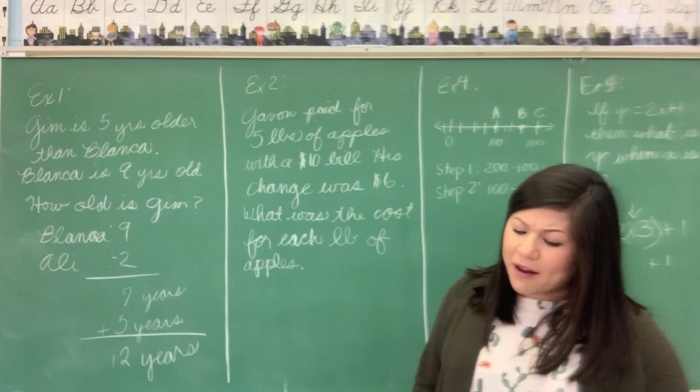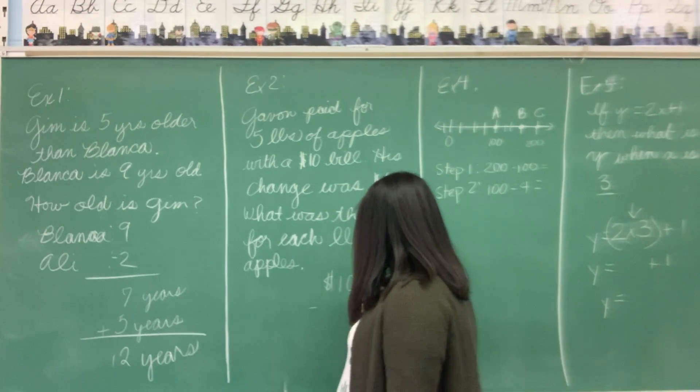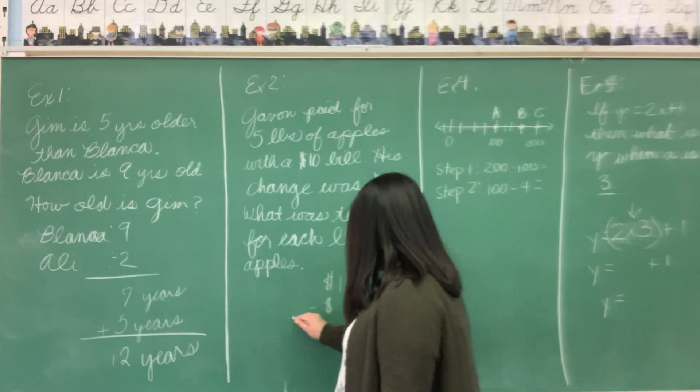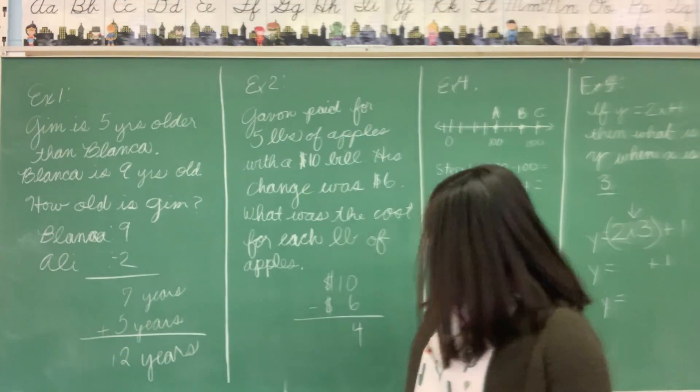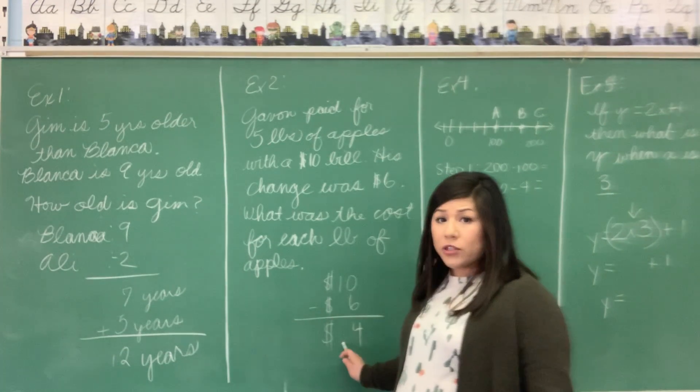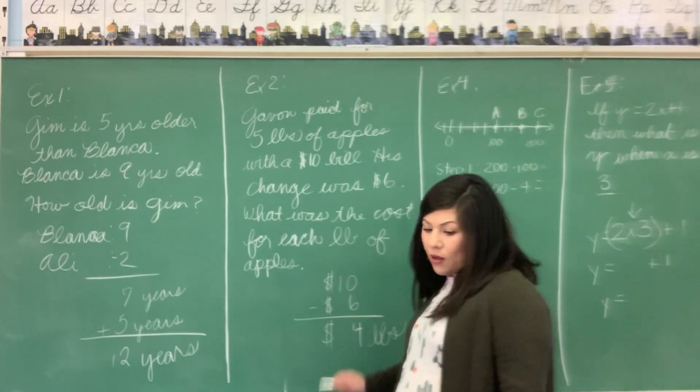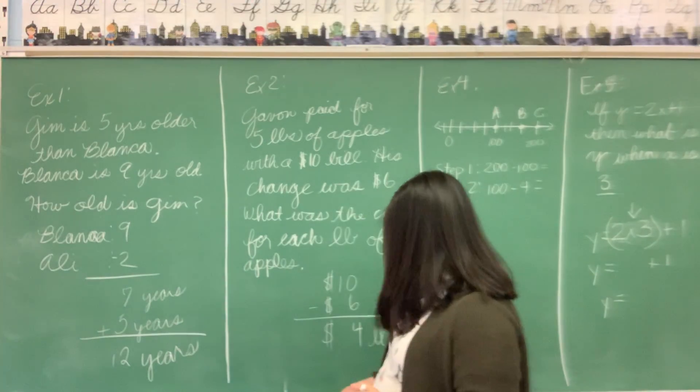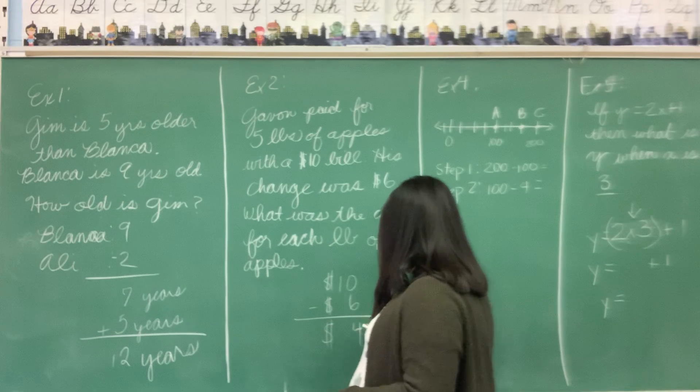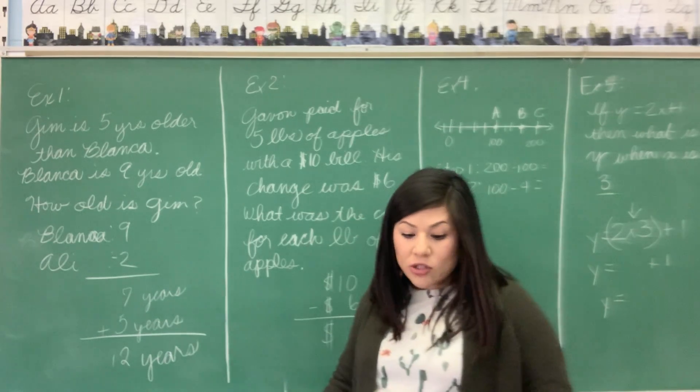Alright, so if Devon paid for the apples with a $10 bill and received back six dollars in change, that means the cost for those apples was $4 for five pounds of apples. So that's the first thing we see here.